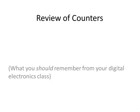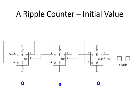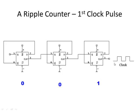Before we look at the PIC timer counters, let's take a little review about ripple counters — what you should remember from your digital electronics class. You're looking at a 3-bit ripple counter. Each flip-flop represents 1 bit, and it has a clock pulse coming in, and the counter will count each clock pulse that comes through. Its initial value starts out with all 0s, so we have 0, 0, 0 out of the ripple counter. When the first clock pulse comes in, it's going to cause the ripple counter to count up to 1.